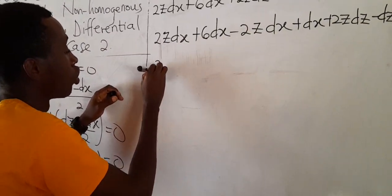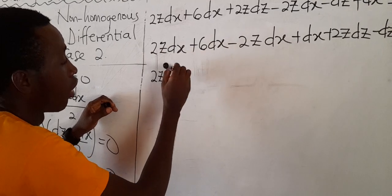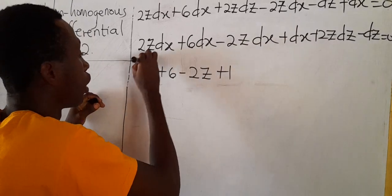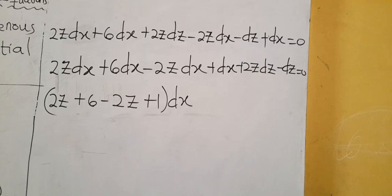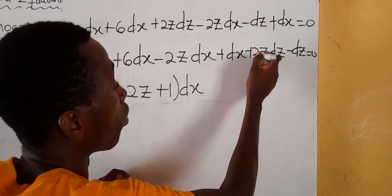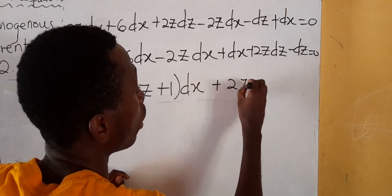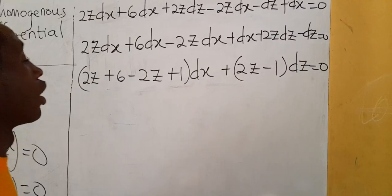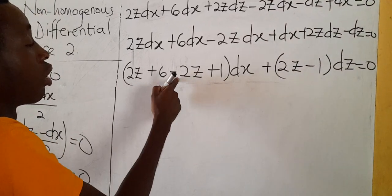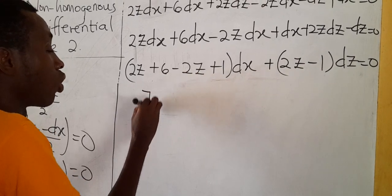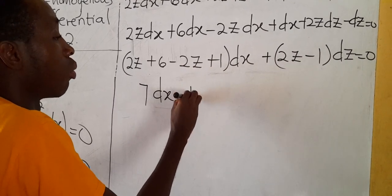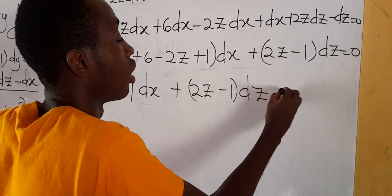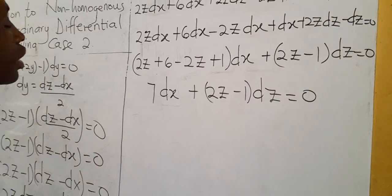Grouping dx terms together: (2z plus 6 minus 2z plus 1)dx plus (2z minus 1)dz equals 0. The 2z terms cancel, leaving 7 dx plus (2z minus 1)dz equals 0. We have successfully separated the variables.